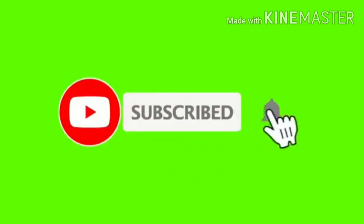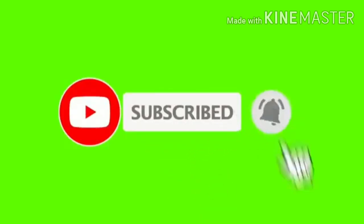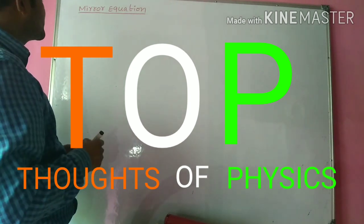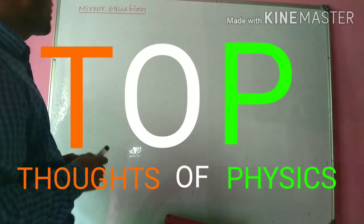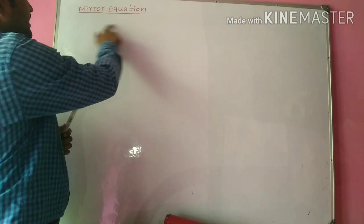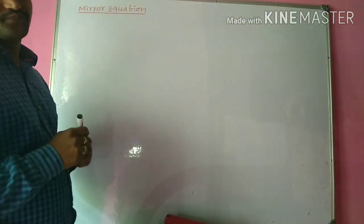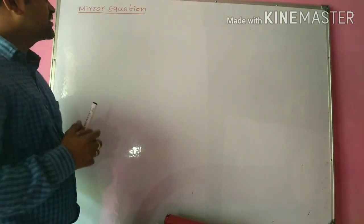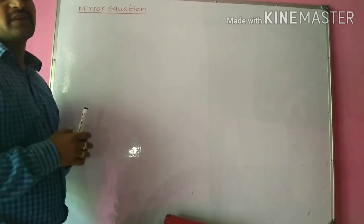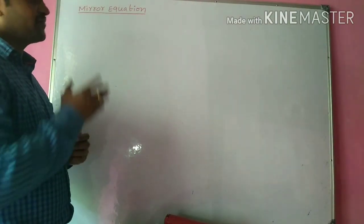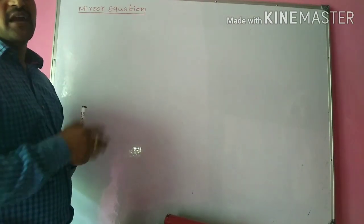Hi students, welcome to my channel Thoughts of Physics. In the video series of ray optics, in this class I am going to explain the mirror equation. This mirror equation gives the relation between focal length of the mirror, object distance, and image distance.